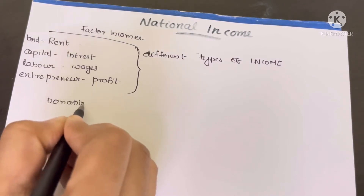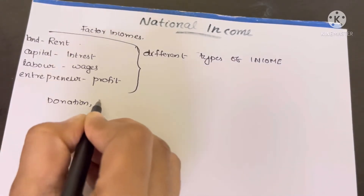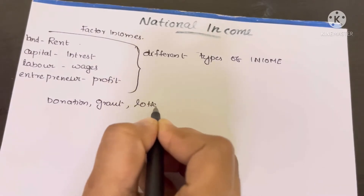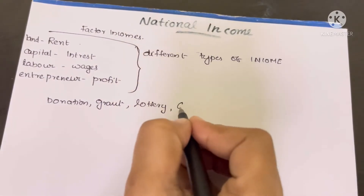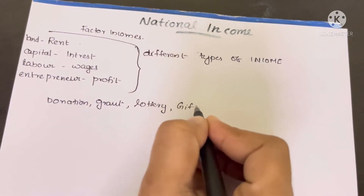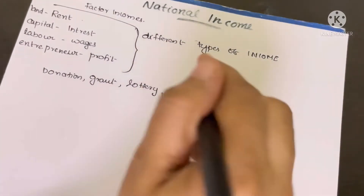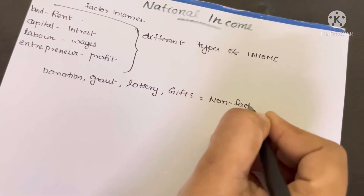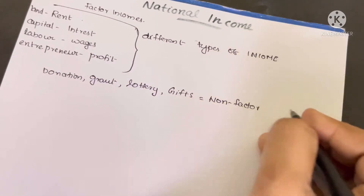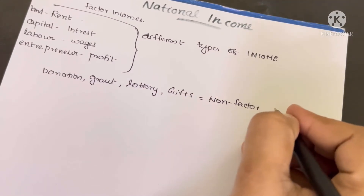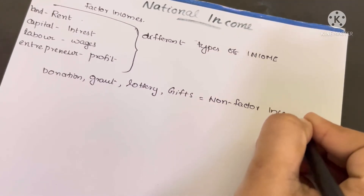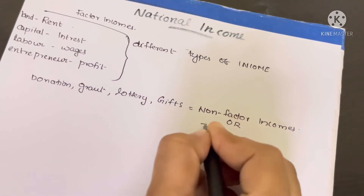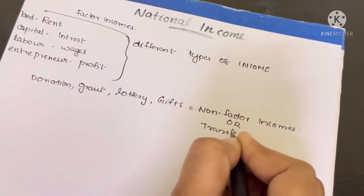We also have non-factor income. For example, we have donations, grants, lottery winnings, and gifts. These are called non-factor income or transfer income.